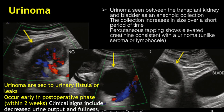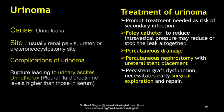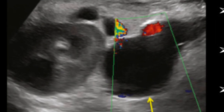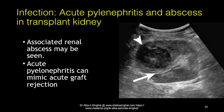Rare complications of urinoma include urinary ascites or ascending into the thorax leading to urinary thorax. Lymphoceles are usually seen later, about one to two months or more post-transplant, caused by leakage from injured lymphatics during surgery. These are anechoic and may contain septations. Any echogenicity within the collection suggests secondary infection and needs further evaluation and treatment.